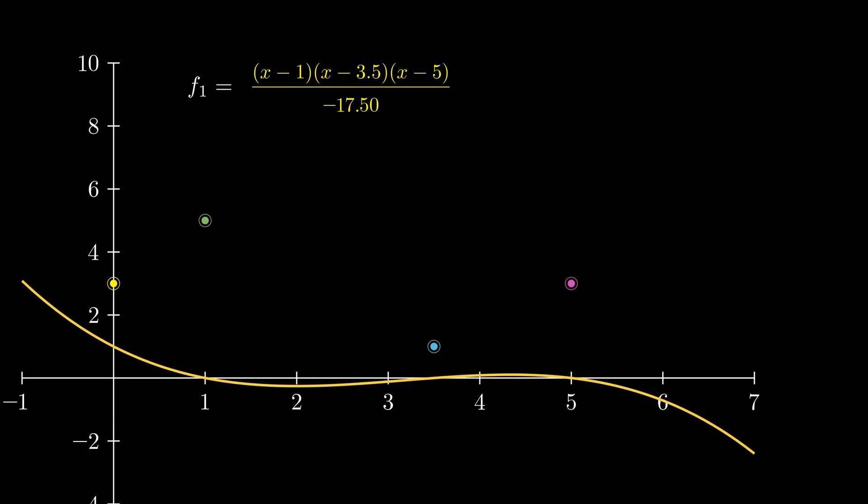In our case, the y value at the first point is minus 17.5. So dividing by minus 17.5, we can make the function value one at x equals zero. What we have done essentially is substituted x equals zero in f1 and divided it.